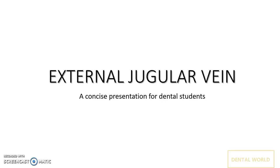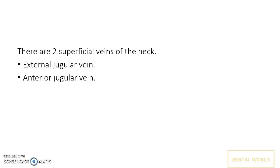Hello everyone. In this video I will be discussing the external jugular vein. There are two superficial veins of the neck: the EJV and AJV, that is the external jugular vein and the anterior jugular vein.